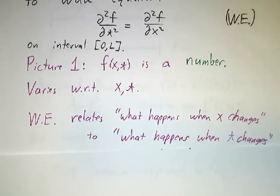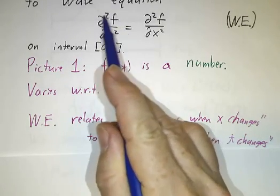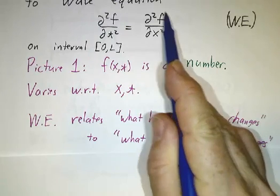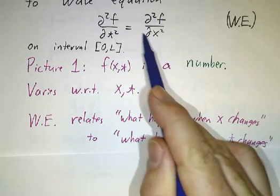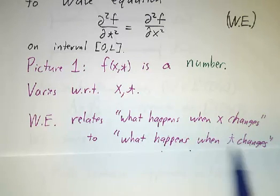And then the wave equation itself says, well, the left-hand side says how f changes when you vary the time, and the right-hand side tells you how f is changing as you vary your position, and the wave equation relates what happens when x changes to what happens when t changes.